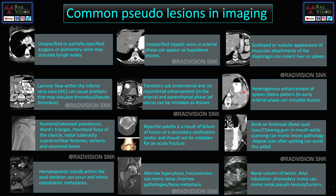Transient subendometrial enhancement in the early arterial parenchymal phase of the uterus can mimic lesions. In the early arterial phase there is heterogeneous enhancement of the spleen — excessive enhancement of the red pulp with hypointense white pulp — giving a differential enhancement or zebra pattern. This is normal and should not be mistaken for pathology; it should be confirmed in the delayed or venous phase.